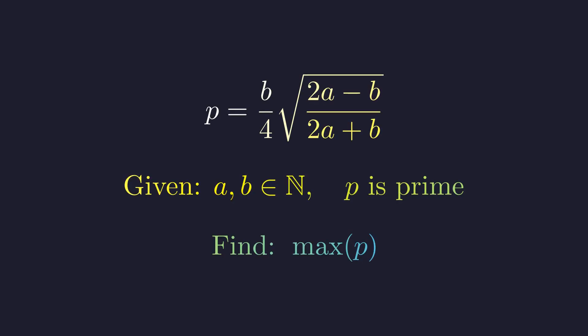Here we have a prime number p, defined by this expression involving two natural numbers, a and b. We want to find the largest possible value of p. Now, this might look intimidating at first glance, but as we'll see, the rigid constraints of number theory will force some beautiful structure to emerge.